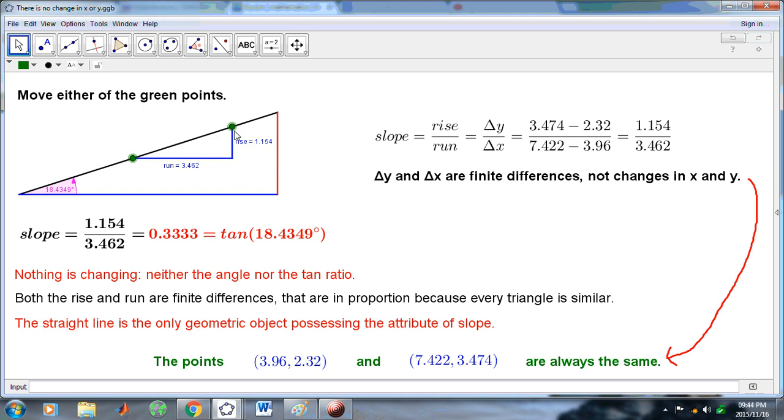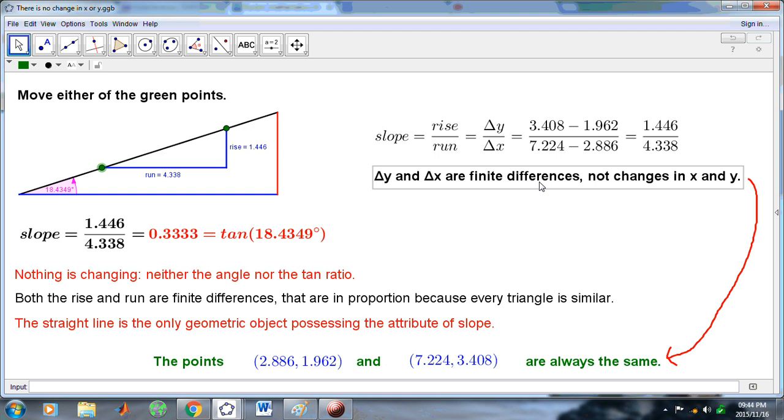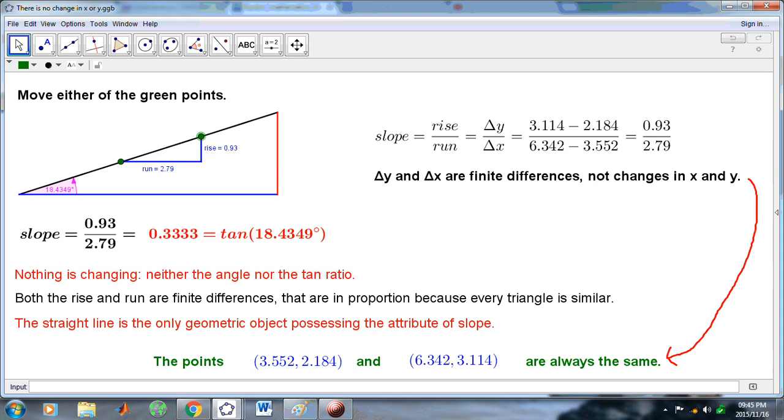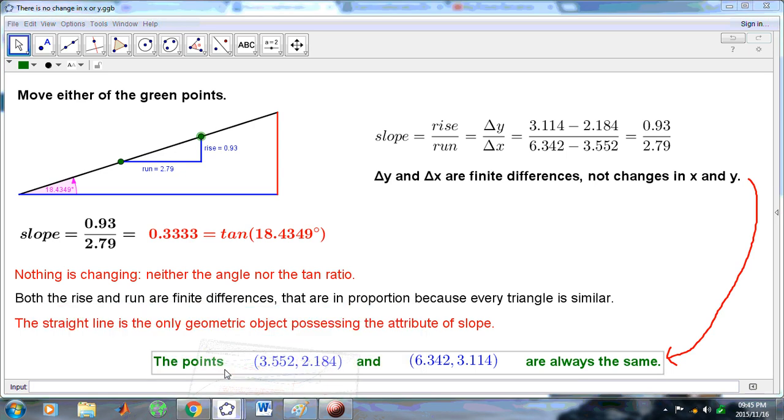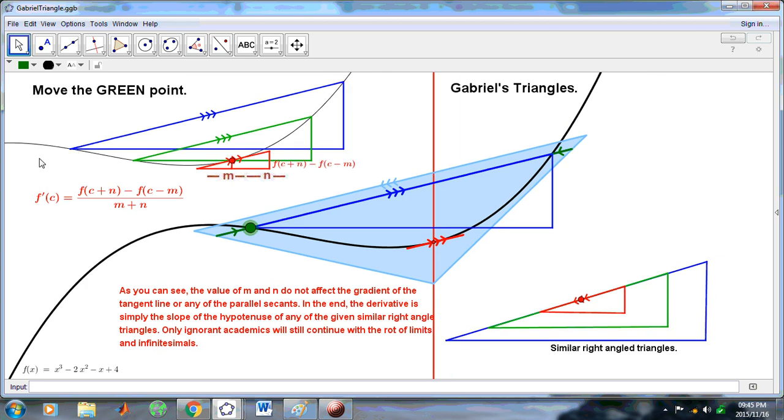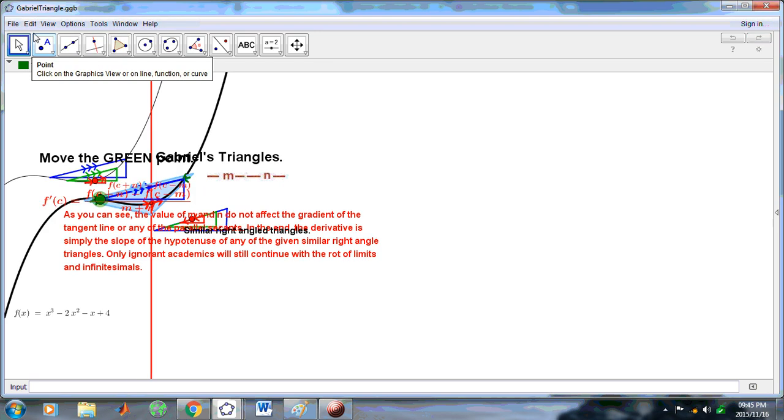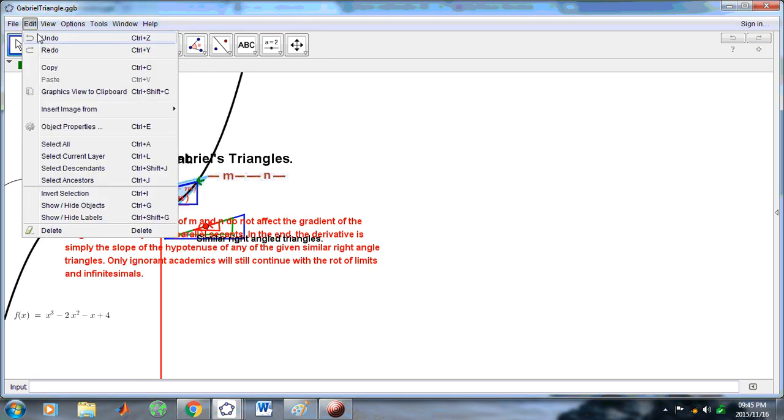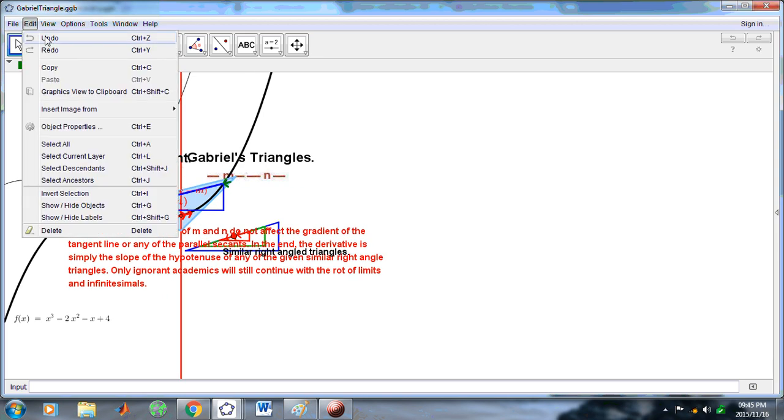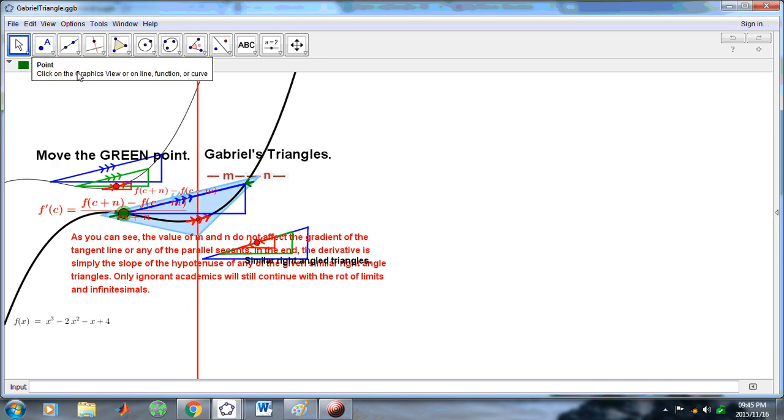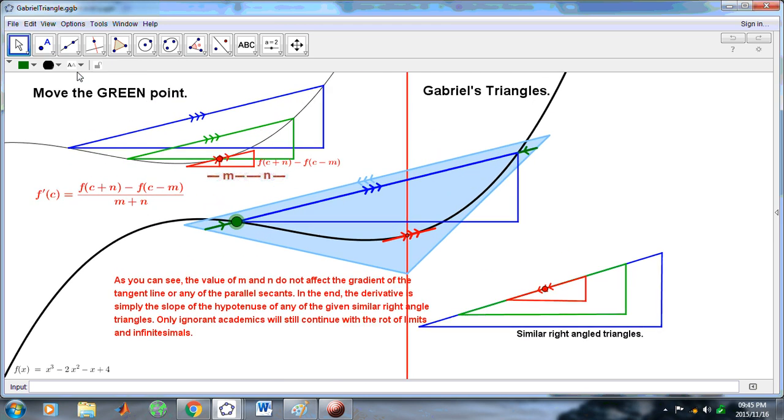For example, it doesn't matter where these points are located. dy and dx are finite differences, not changes in x and y. And this particular ratio, which is a third, doesn't change for this line. There is nothing changing. And then there is this particular applet.